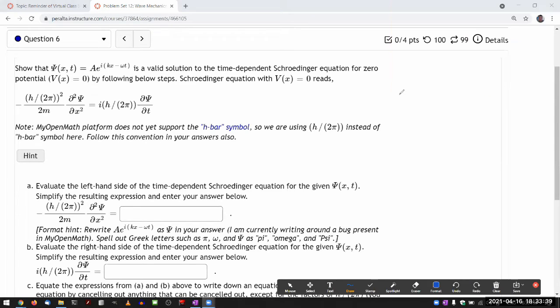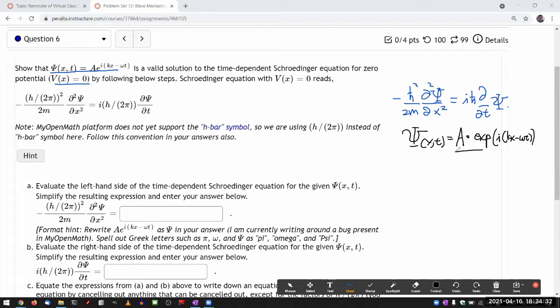take plugging in known solutions or suspected solutions to see if it's an actual solution or not. So let me write out this Schrödinger equation on the side so that as I scroll down, there's a copy of Schrödinger equation on the side. I'm just going to use h bar notation, but the system still does not accept h bar.